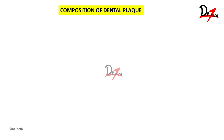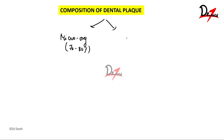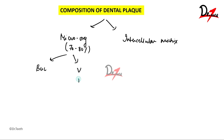Now let's discuss the composition of dental plaque. It is majorly made up of microorganisms — the bulk of the plaque is approximately 70 to 80 percent microorganisms. These microorganisms are embedded in an intercellular matrix. The microorganisms associated with plaque are mostly bacteria, but there can also be other microorganisms such as viruses, protozoa, yeasts, and fungi.